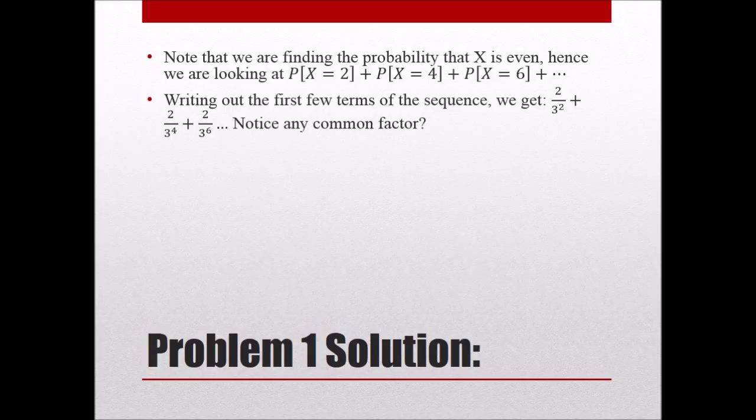When we do that, we now have 2 over 3 squared, and then the remaining sequence is 1 plus 1 over 3 squared plus 1 over 3 to the fourth. Now you notice I ask, what is the common ratio? The reason I'm asking that is because you should be able to identify that this is a geometric series.